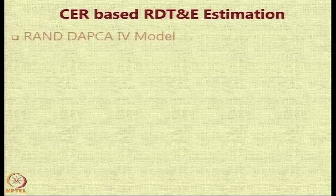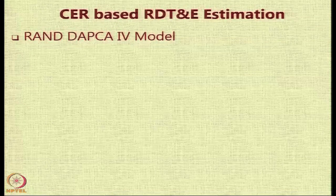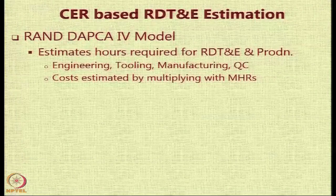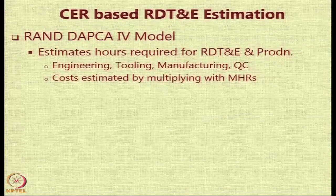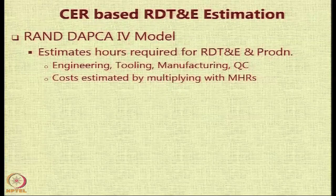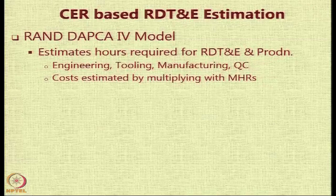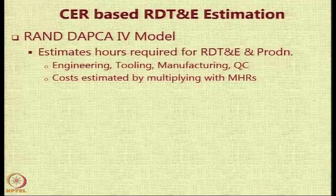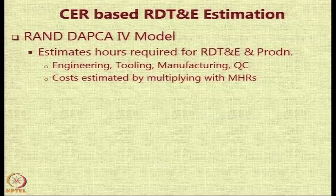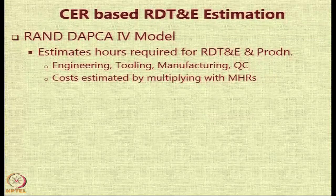When you do a CER-based RDT&E estimation, one very popular model is the DAPCA-4 model given by the RAND Corporation, which is also explained in detail in Raymer's textbook. In this model, one estimates the hours needed for various aspects of the RDT&E phase and the production of prototypes. These activities are divided into the engineering activity, the tooling activity, the manufacturing activity, and the quality control activity.